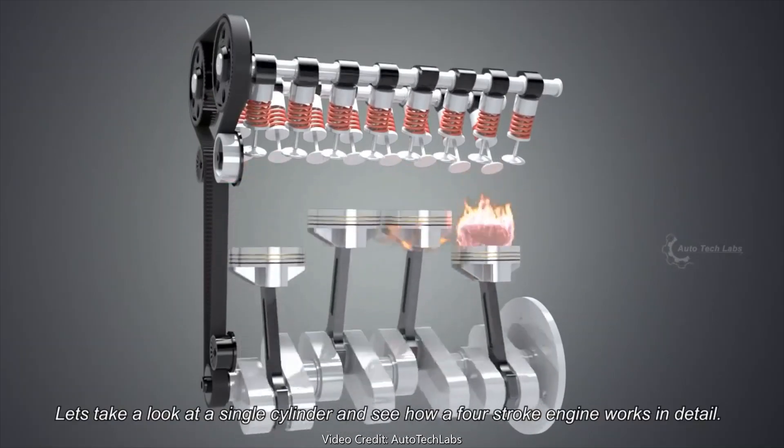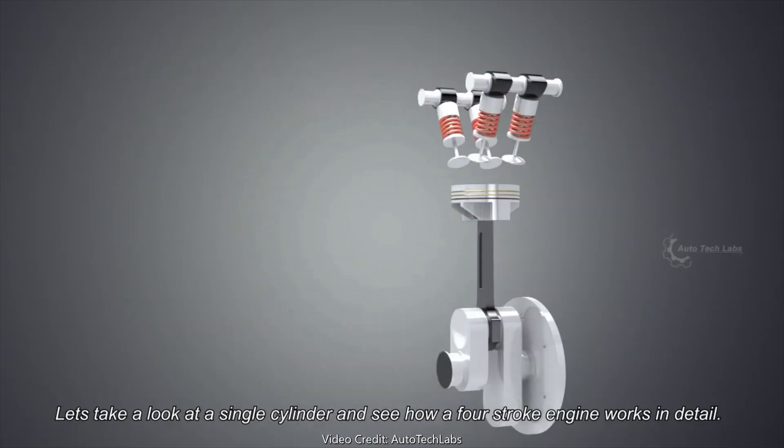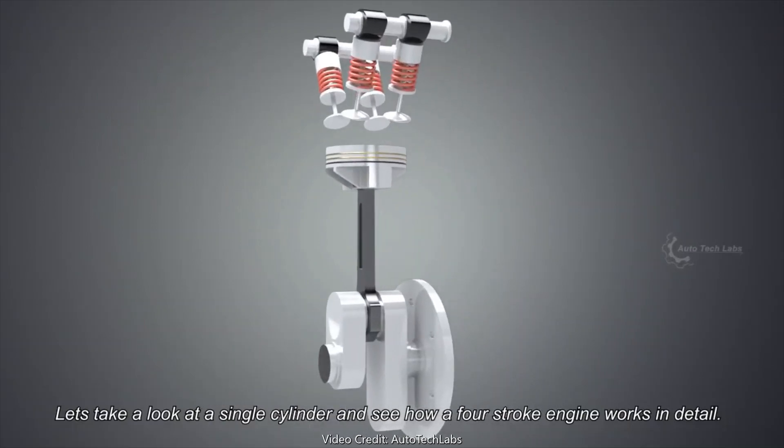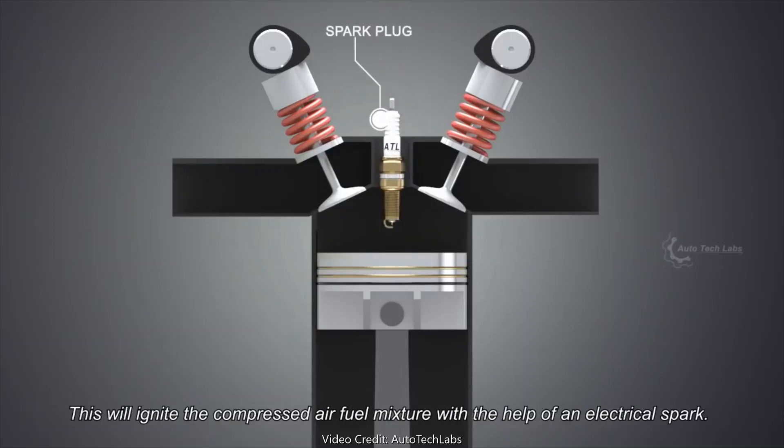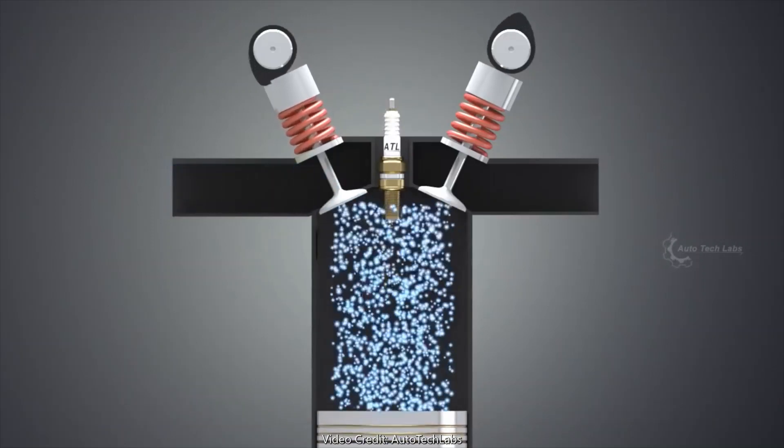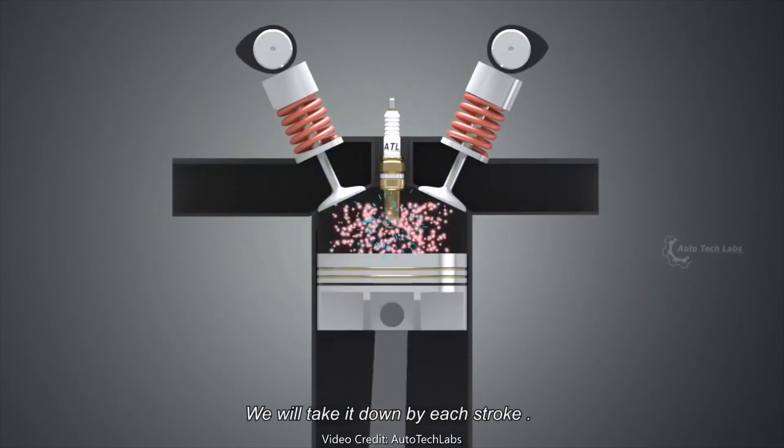Let's take a look at a single cylinder and see how a 4-stroke engine works in detail. In order to ignite the air-fuel mixture, a spark plug is used. This will ignite the compressed air-fuel mixture with the help of an electrical spark.